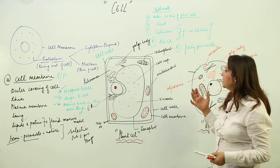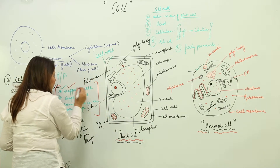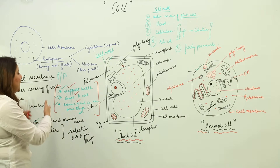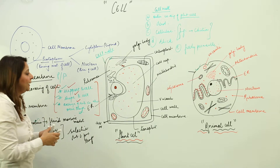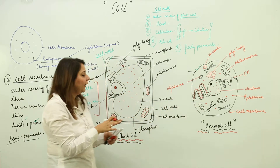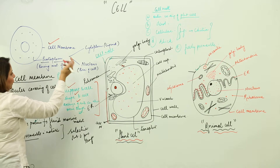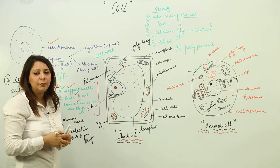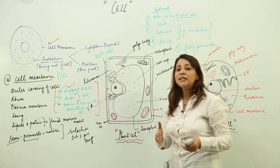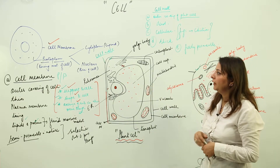The cell wall also provides support and shape to the cell and allows exchange of substances. To recap: the cell membrane is present in both plant and animal cells, but the cell wall is present only in plant cells. The other name for the cell membrane is the plasma membrane — be familiar with both names.